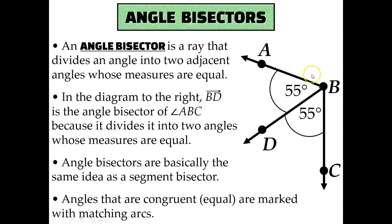For example, in this diagram I see angle ABC, this whole angle, and I see ray BD in the middle of it. The two angles that were created when BD cut angle ABC are these two 55 degree angles, angle ABD and angle DBC.